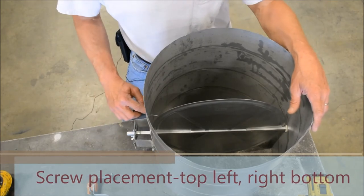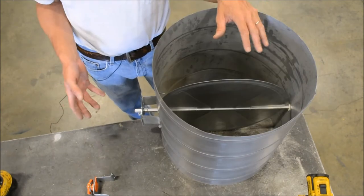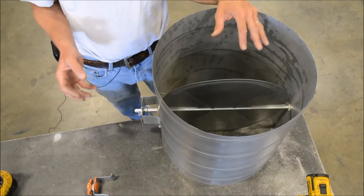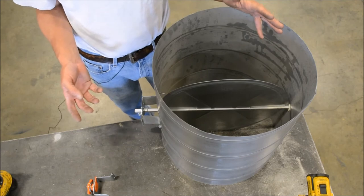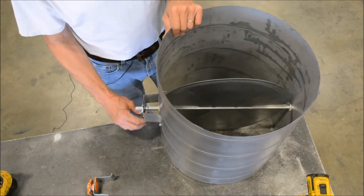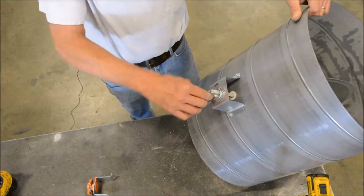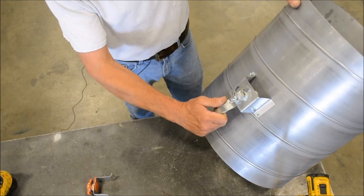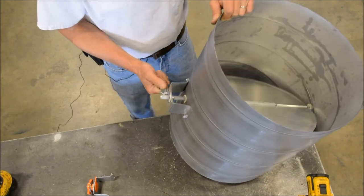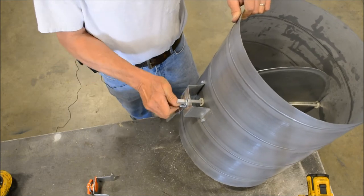Okay, so that's basically how we install a single blade damper in the single wall spiral. The handle itself is actually a wing nut type, open and close, and you can screw it down to lock it into place. Done.